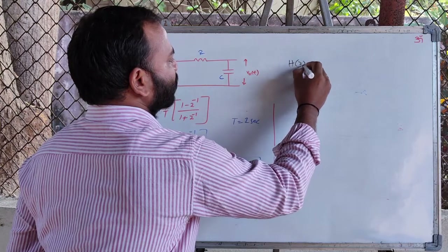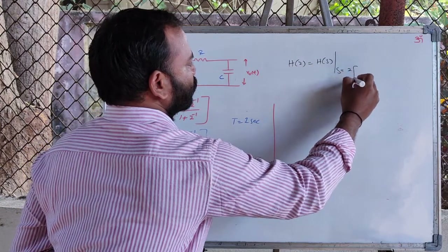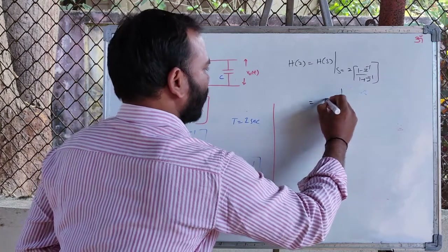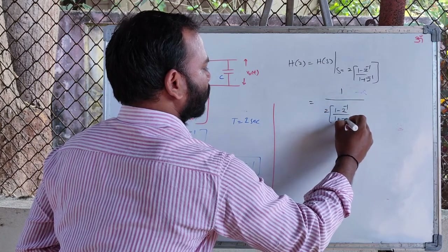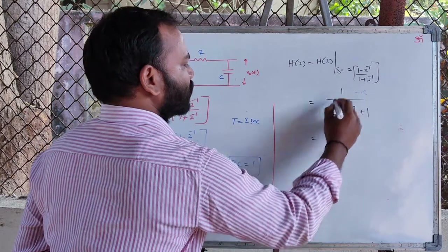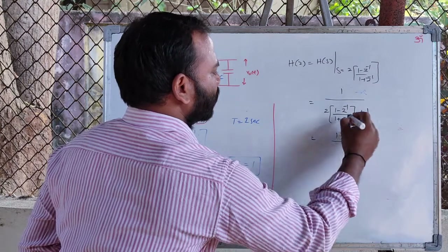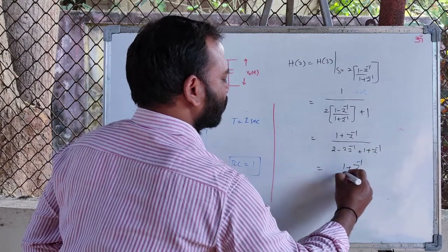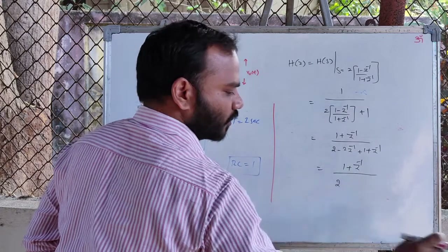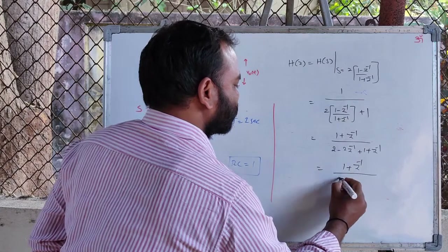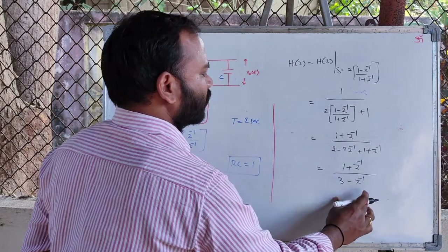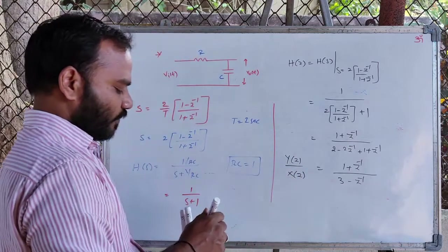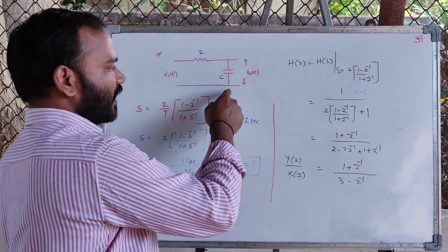H(z) = H(s) evaluated at s = 2 × (1 − Z⁻¹)/(1 + Z⁻¹), which equals 1 / (2 × (1 − Z⁻¹)/(1 + Z⁻¹) + 1). Simplifying, this becomes (1 + Z⁻¹) / (3 − Z⁻¹). This is Y(z)/X(z) — the digital transfer function for this analog low-pass filter.